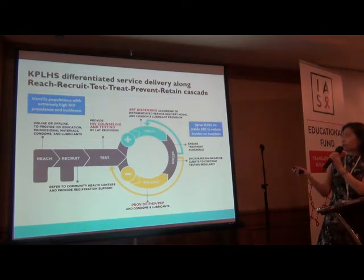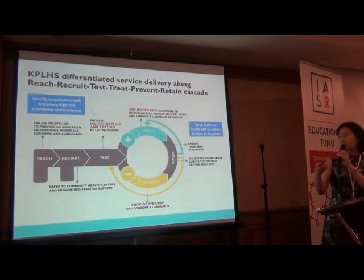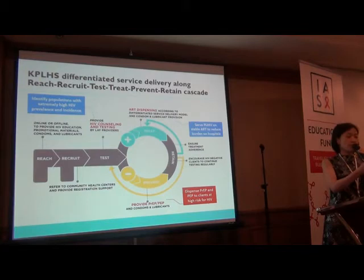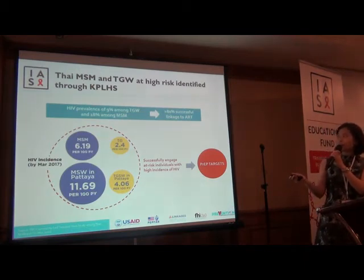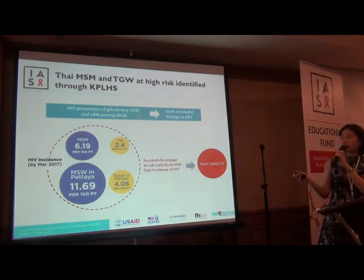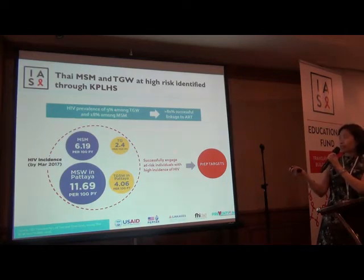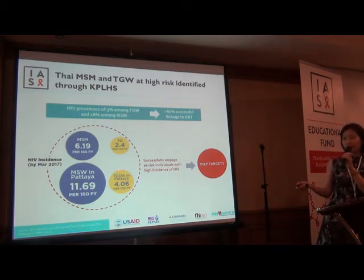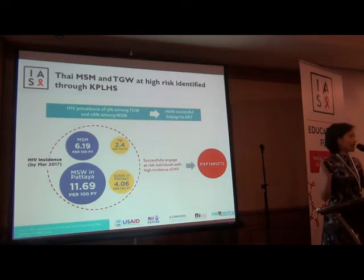We have also been able to serve people living with HIV on stable ART and reduce the burden on the hospital — a win-win situation between public health facilities and community-based organizations. We have been able to provide PrEP and contribute to more than half of PrEP access in the country right now. The prevalence identified so far using this key population-led model is around 18% among MSM and 9% among transgender women, which is higher than the national-level prevalence. We have successfully linked more than 80% of them into ART care. These populations are having a really high HIV incidence — as high as 12% per year among male sex workers in Pattaya — demonstrating clearly that these are populations who are the prime target for PrEP service.